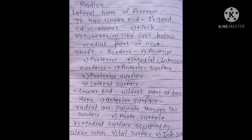Welcome to the channel Homeopathic Soul. We are taking the remaining part of the topic: bones and their attachment. Let's start with the radius. Radius is a lateral bone of the forearm. It has an upper end called the head, which is disc-shaped, and the neck. The tuberosity lies just below the medial part of the neck.